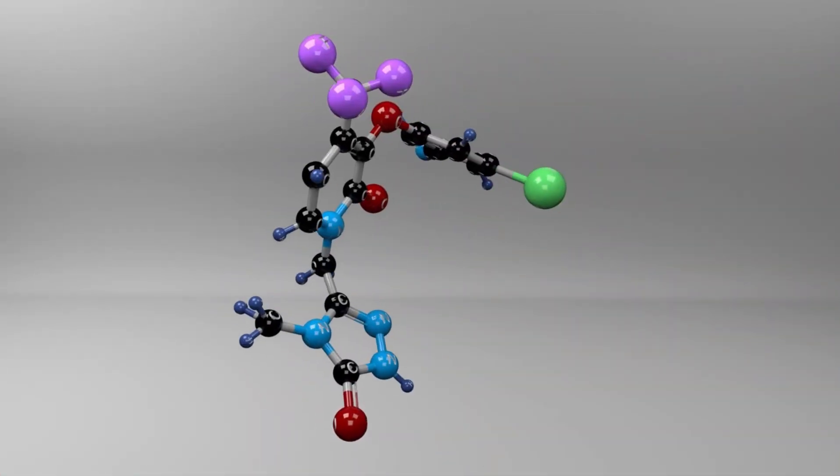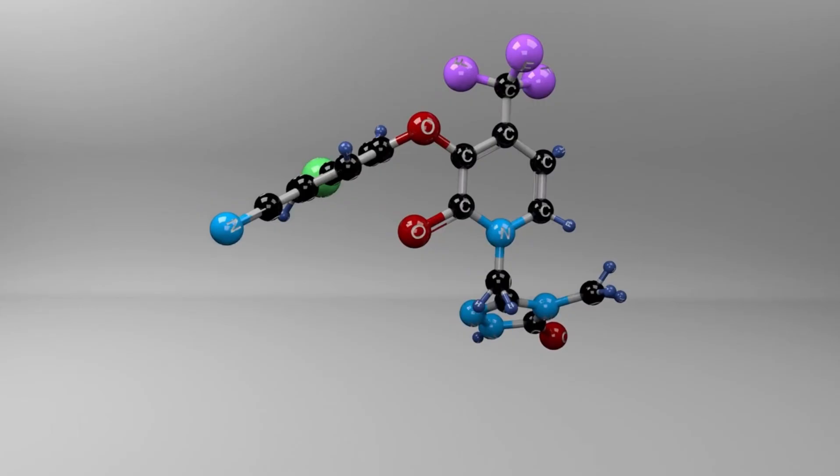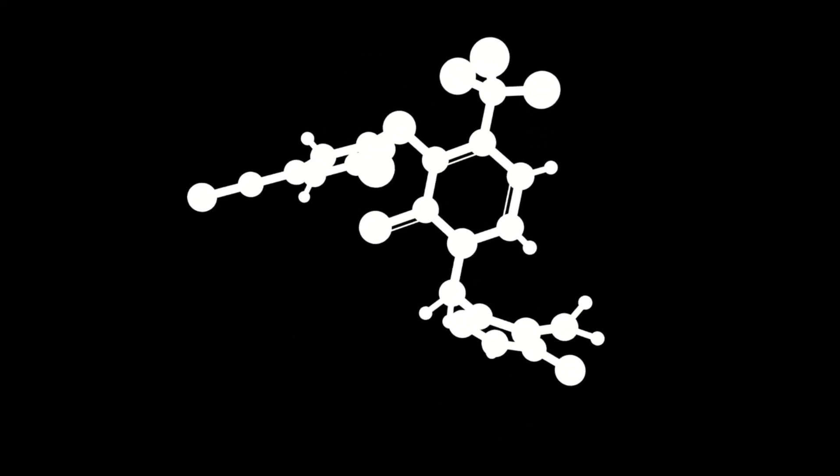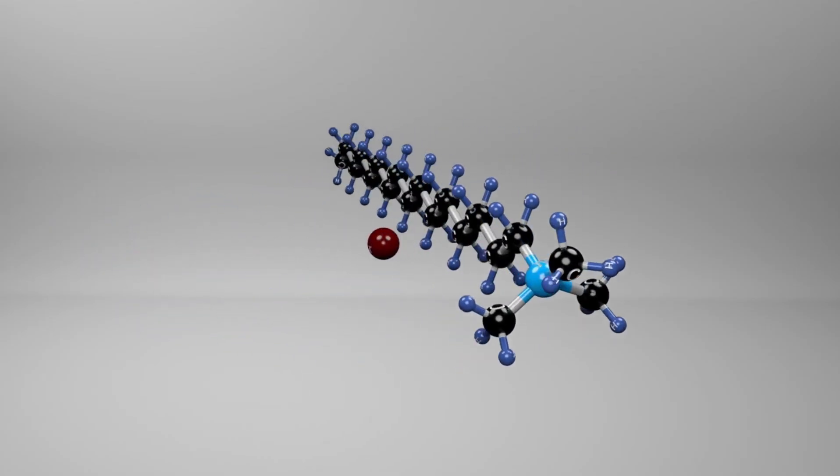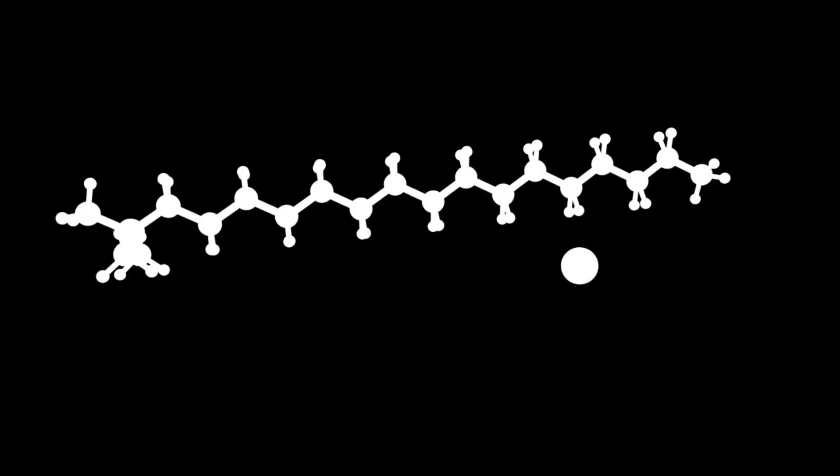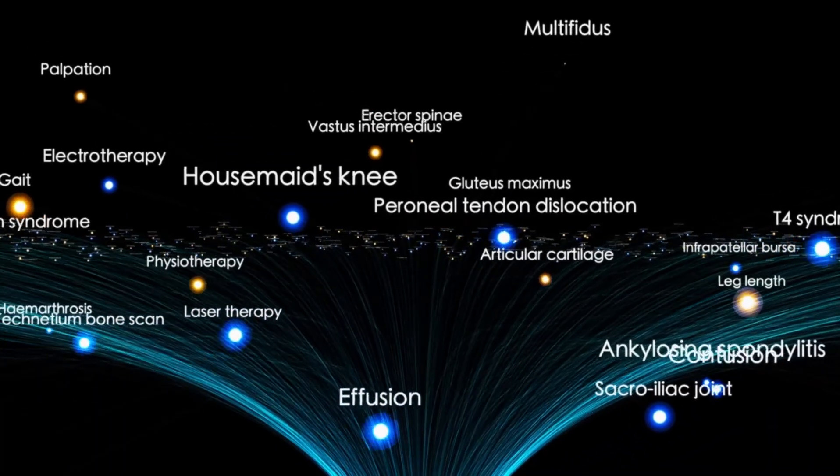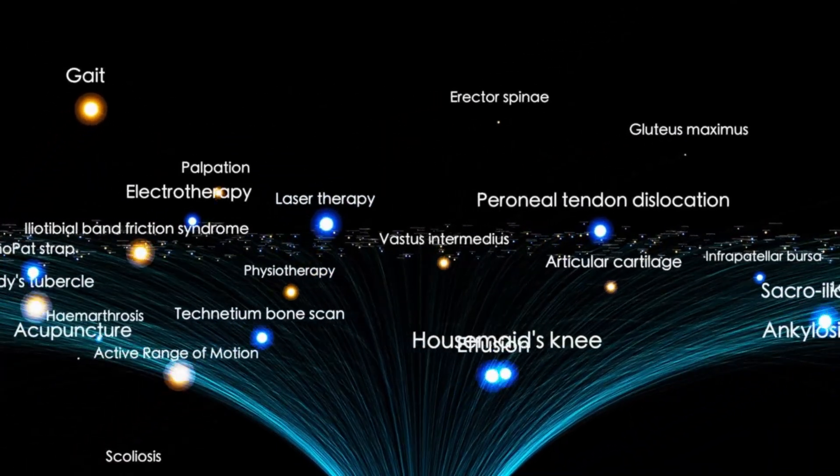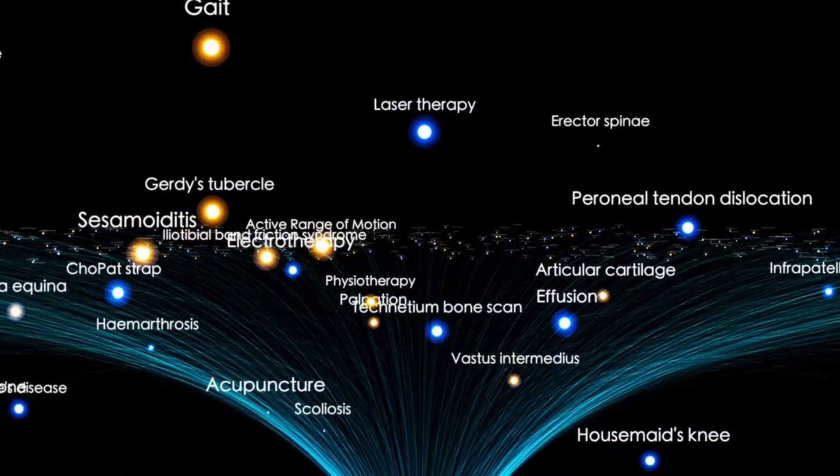And that's not all Webb has uncovered. Far beyond the confines of our galaxy, in a region of space billions of light-years away, Webb has also made the earliest known detection of complex organic molecules. These molecules, similar to those found in Earth's coal, petroleum, and even smog, are technically known as polycyclic aromatic hydrocarbons.